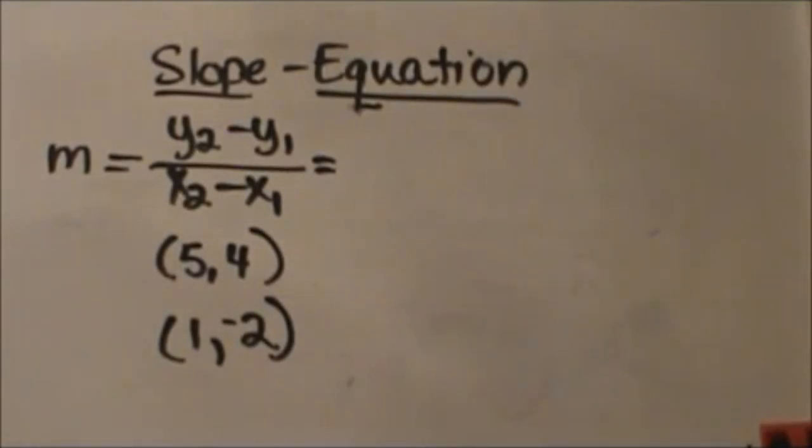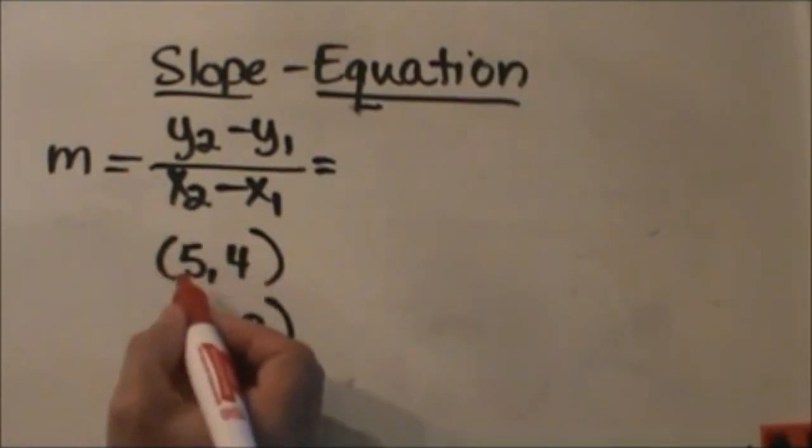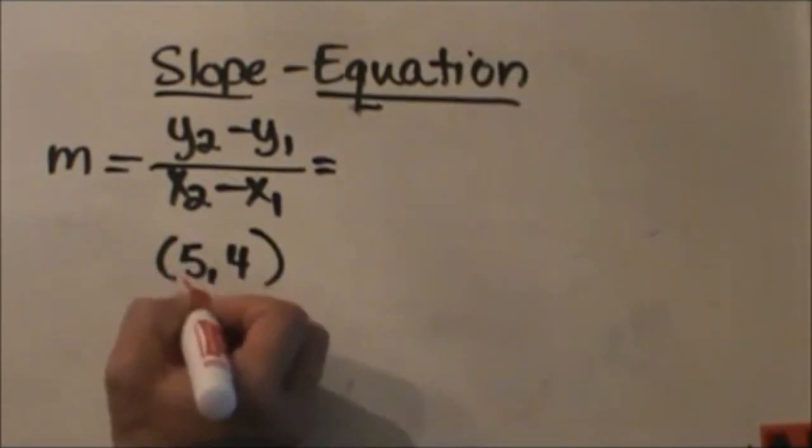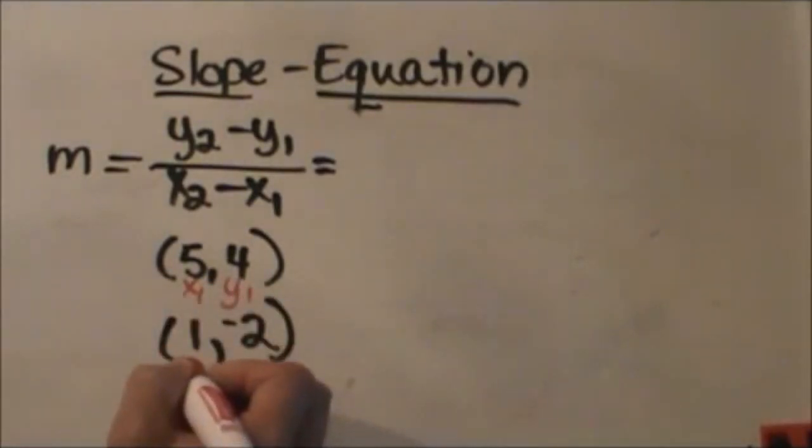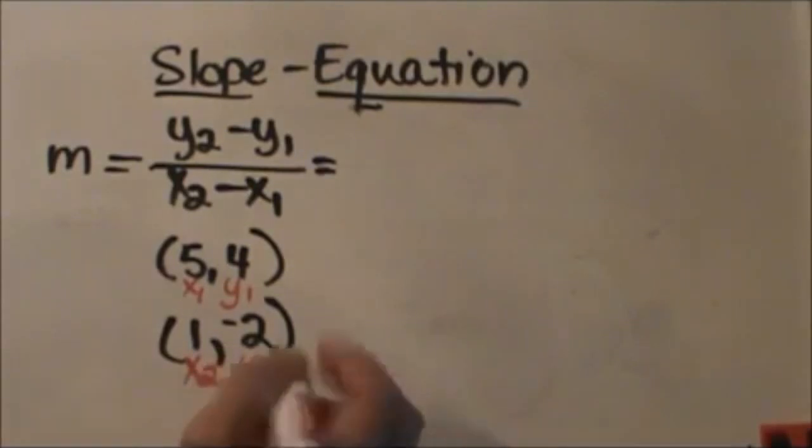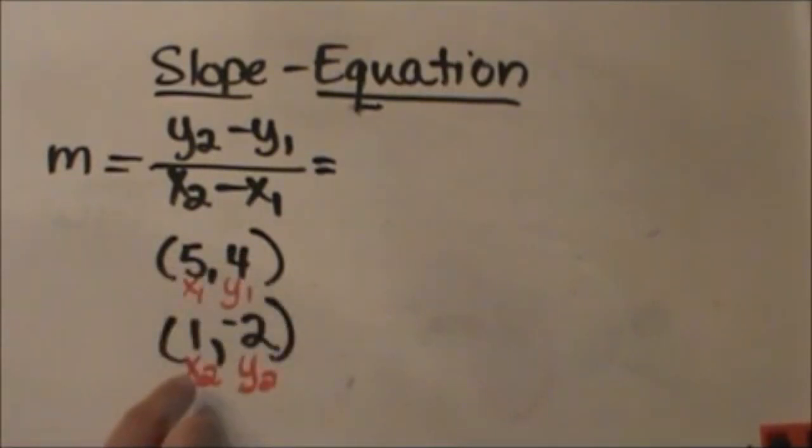Let's work through this example. I'm going to label my ordered pairs as x1 and y1 and the second pair is x2 and y2. Again these are interchangeable. I could make this top ordered pair x2, y2 and the bottom one x1, y1 but I just label them the order they're given to me.